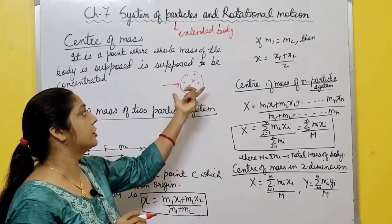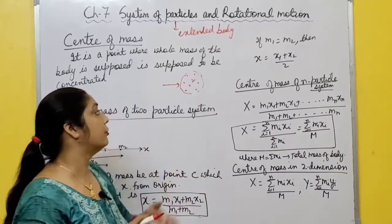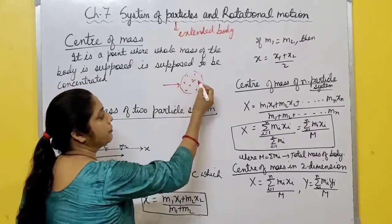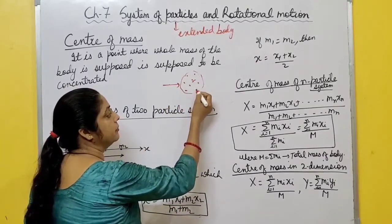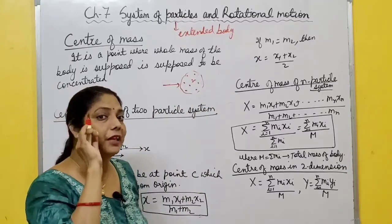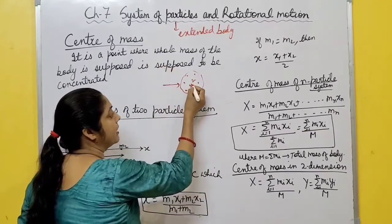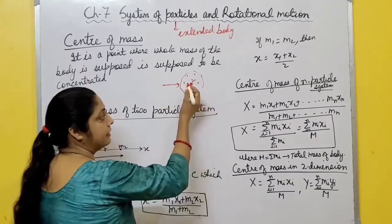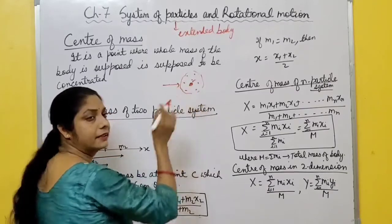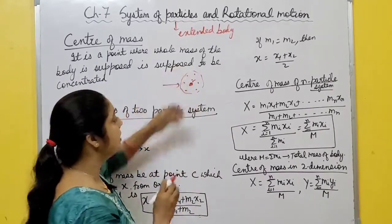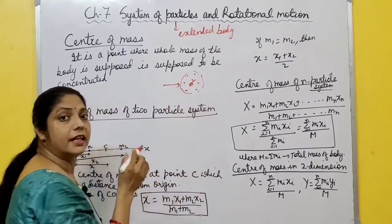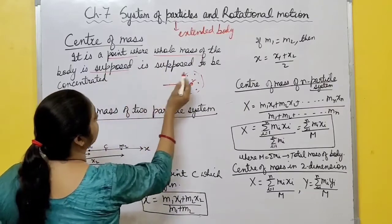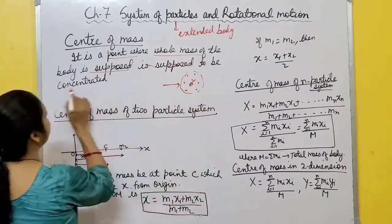To observe the motion of this extended body, Newton's law is still valid, but you must know about center of mass. Because there are large number of particles, it's very difficult to study the motion of each particle. So we assume one point in this body - center of mass - where the whole mass of the body is supposed to be concentrated.